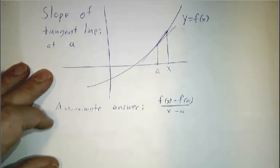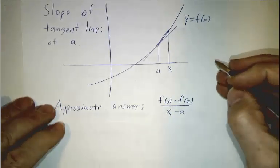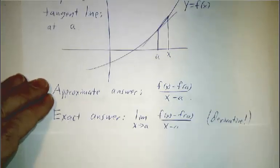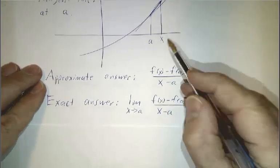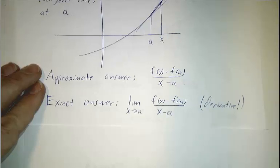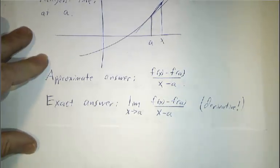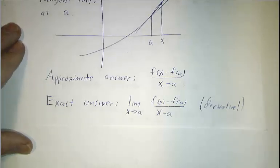So our approximate answer is f of x minus f of a divided by x minus a, and our actual answer is what happens when we take x closer and closer to a. We can't get the exact answer in one fell swoop, but we can get approximate answers and we can make them better.